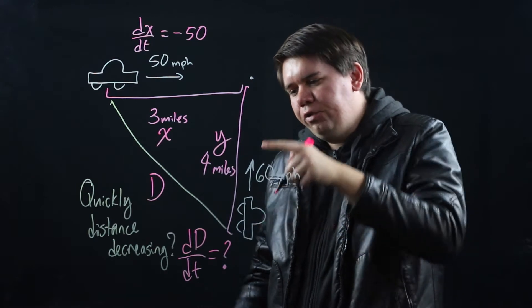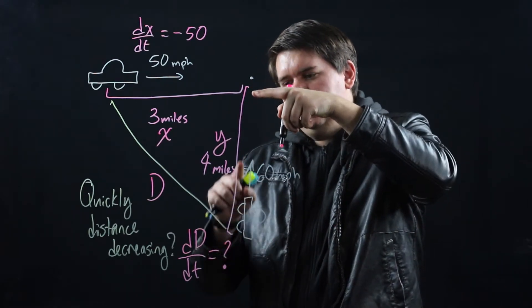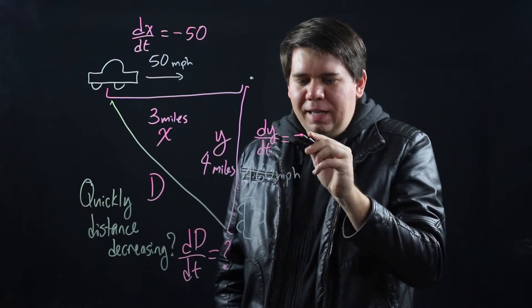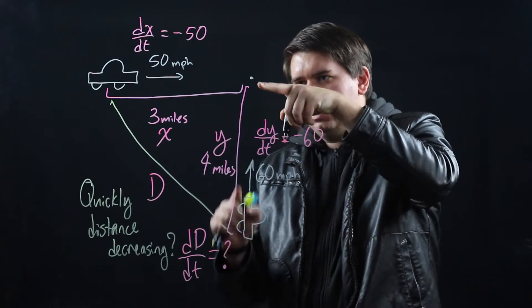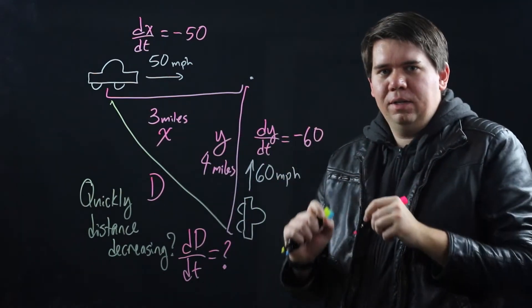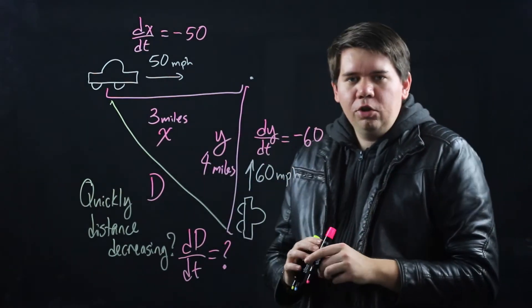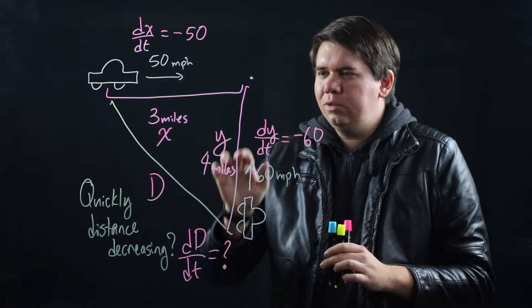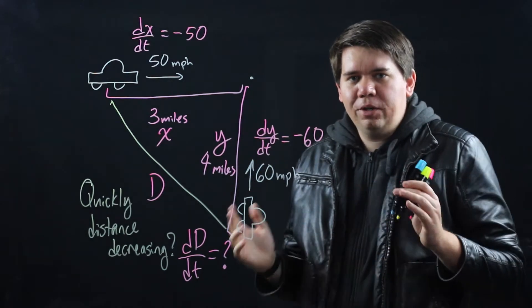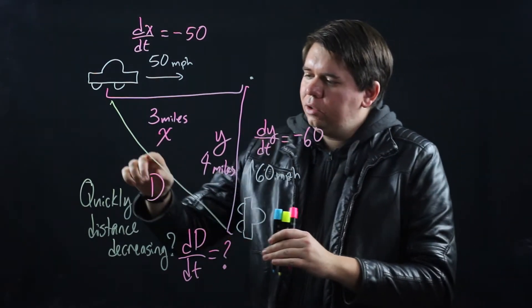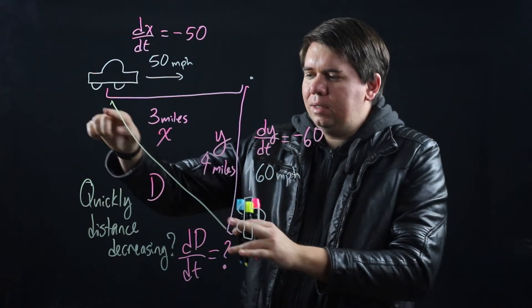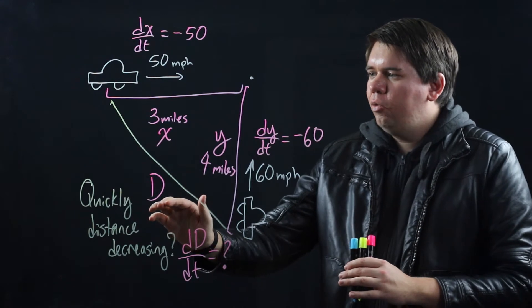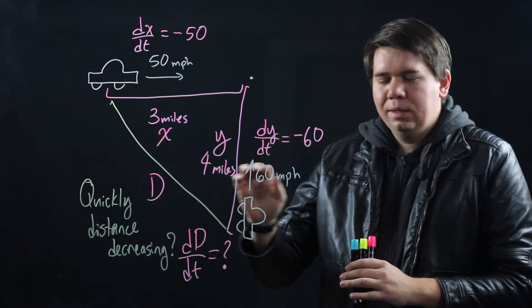Whereas your friends, your friend's change in distance, your friend's change in y over time would also be similarly negative because they're going towards that point, so the distance is decreasing. So negative 60. So notice what we have here. We have information about your rate of change from the intersection point, your friend's rate of change from the intersection point. And what we want to figure out is what is going to be the rate of change of this distance between you. So I need somehow of relating this d with these other quantities, x and y.